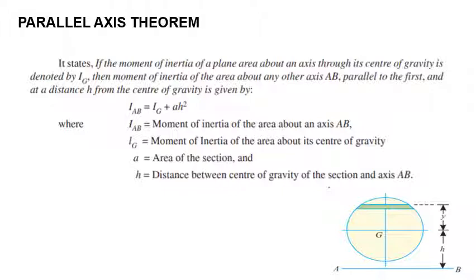Next is the parallel axis theorem, which is very important for solving problems on moment of inertia of composite plane areas. So far we have discussed the moment of inertia of standard sections about the centroidal axes XX and YY. If we need to find the moment of inertia about an axis parallel to the centroidal axis, this theorem is helpful. According to this theorem, if the moment of inertia of a plane area about its centroidal axis is IG, then the moment of inertia about any other parallel axis AB at a distance H from the centroid is IAB equals IG plus A into H squared.